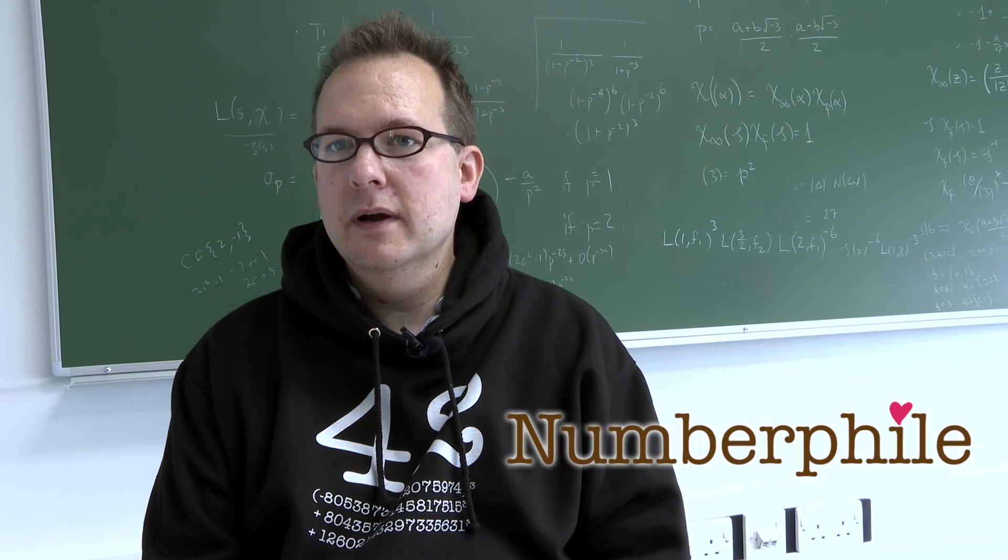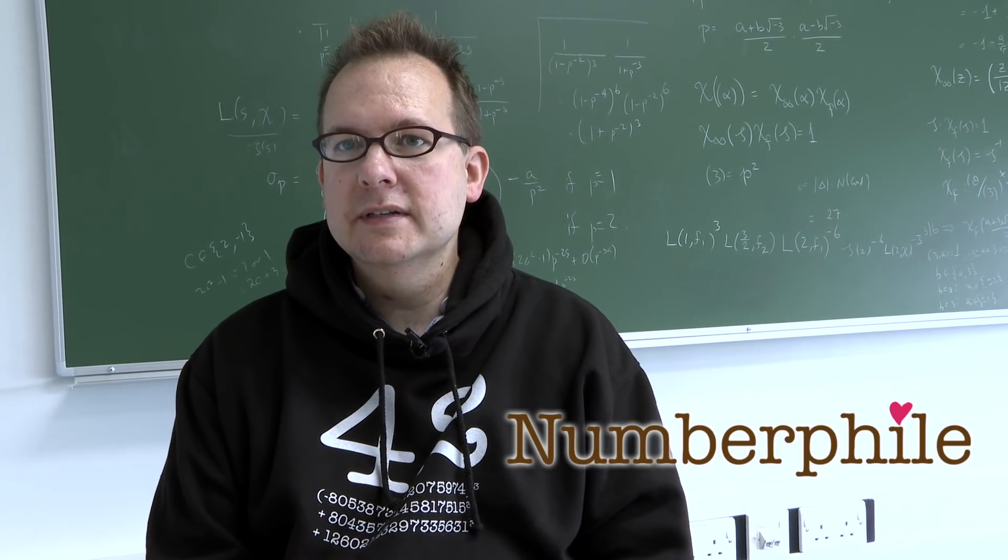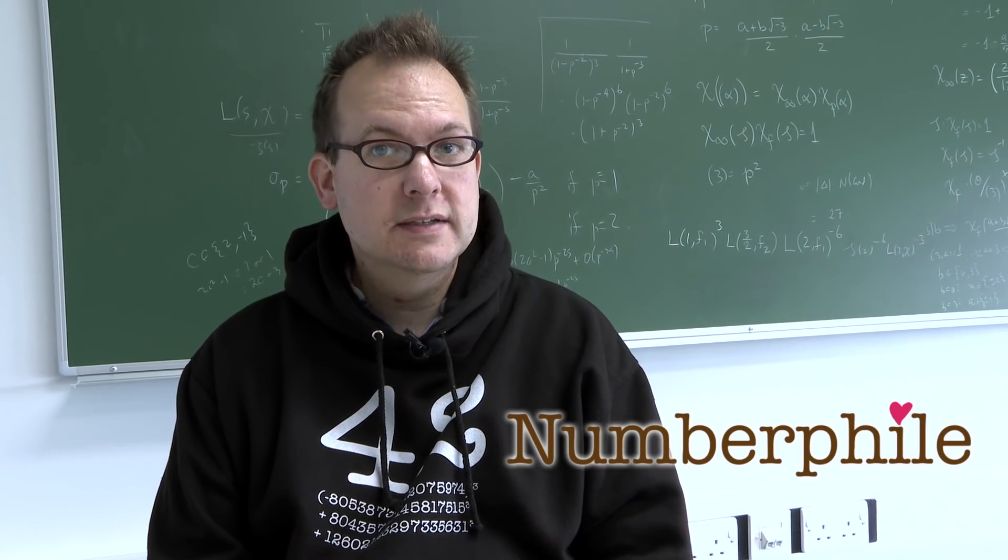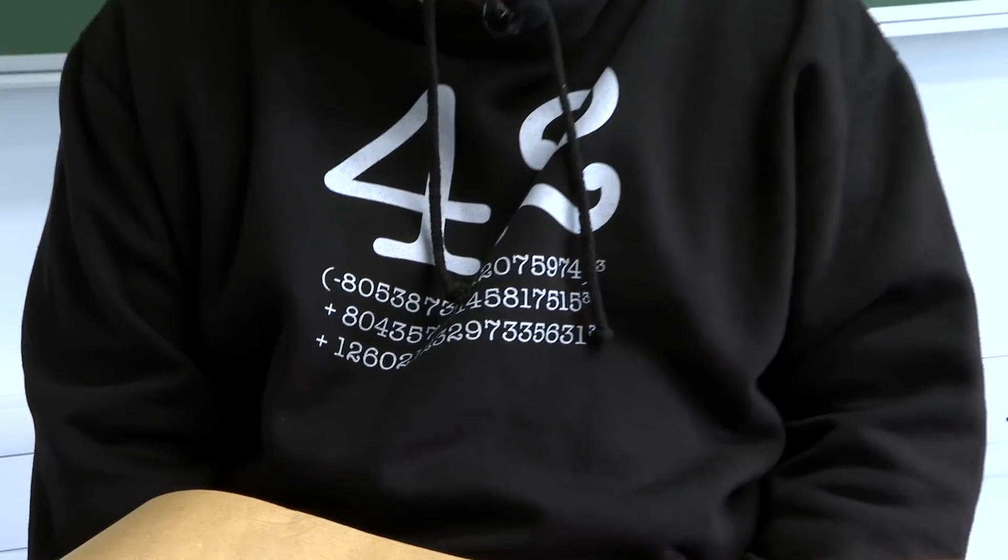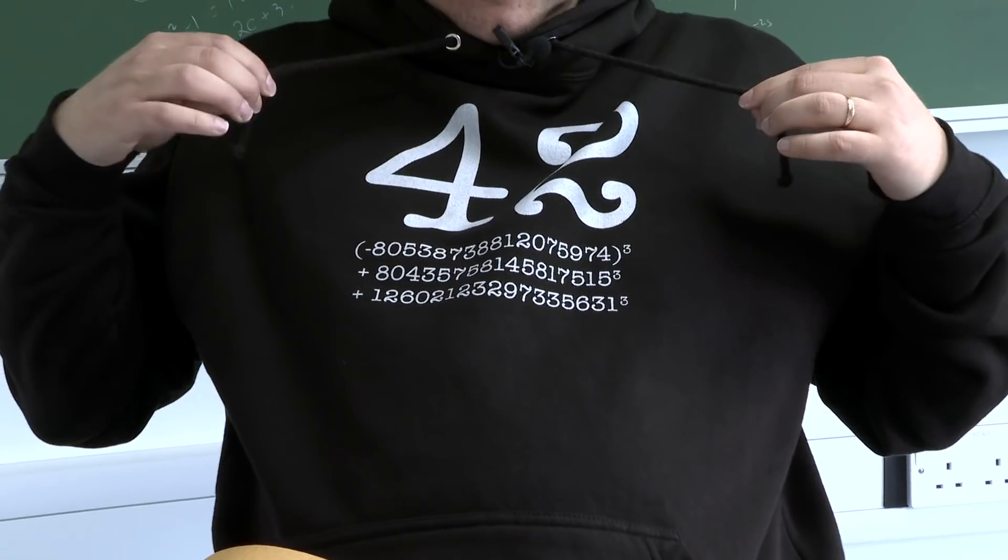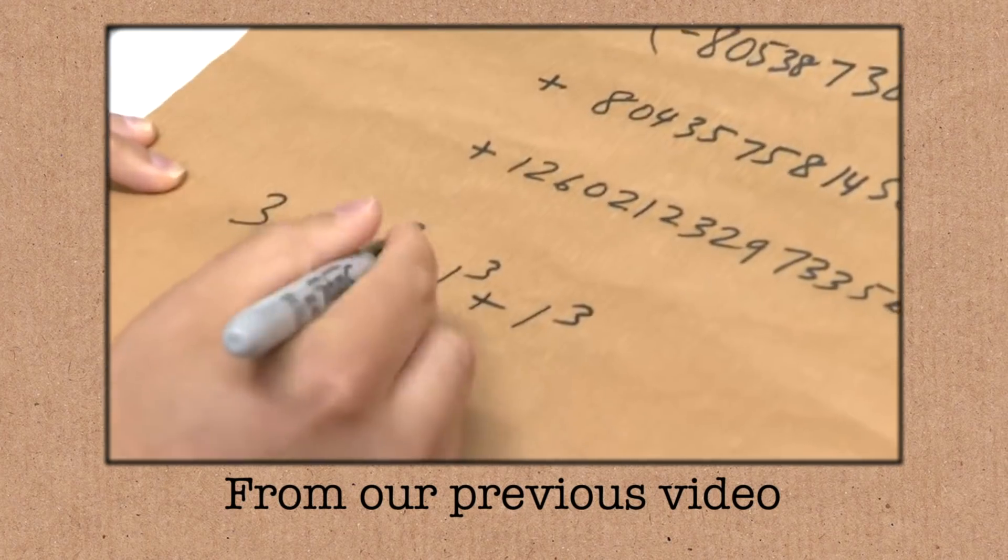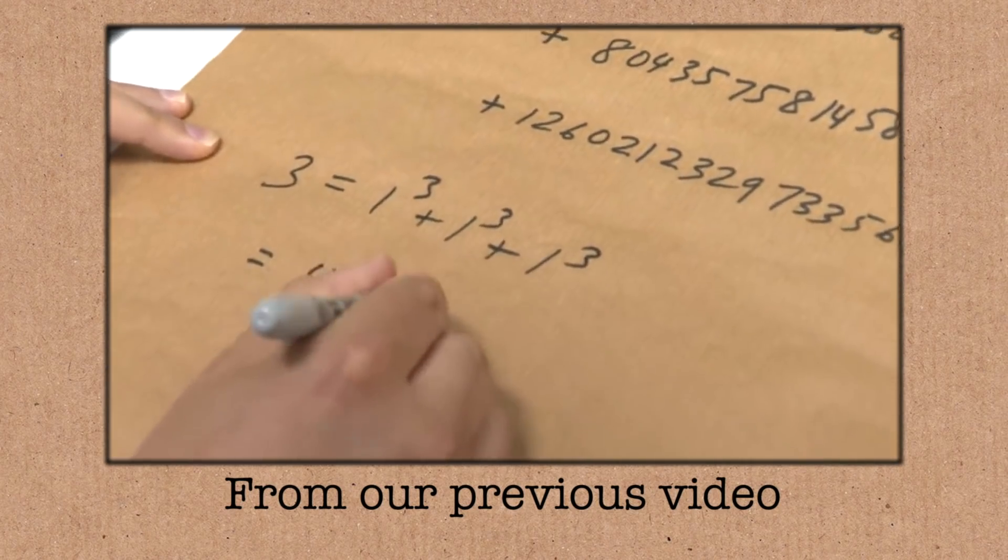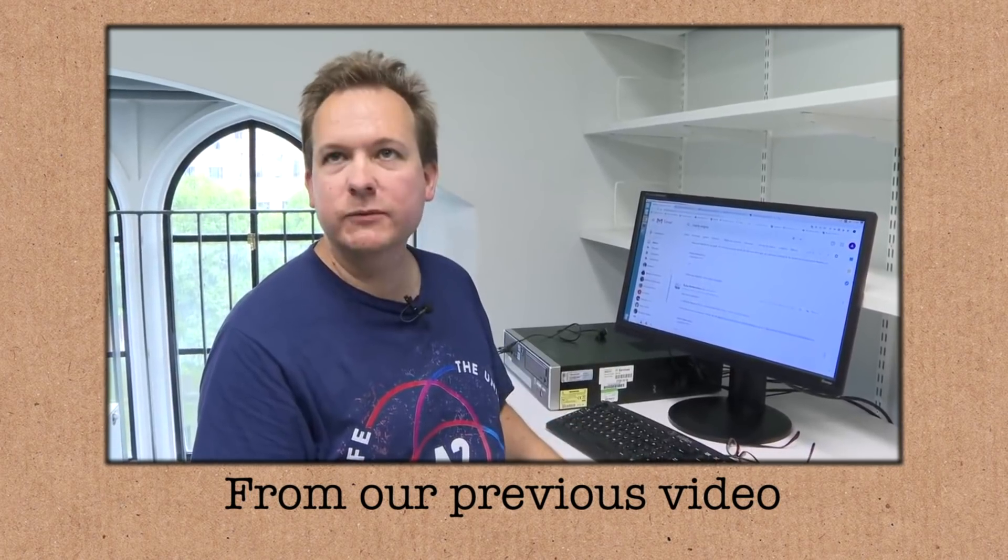A few weeks ago we had a Numberphile video where I reported on the discovery of 42 as a sum of three cubes. There it is, I can see it. So in that video I said that we're going to have a go at finding a representation for 3.